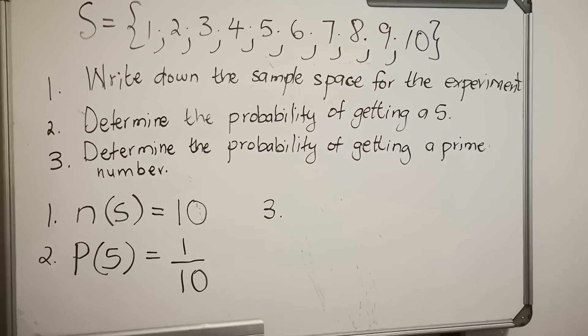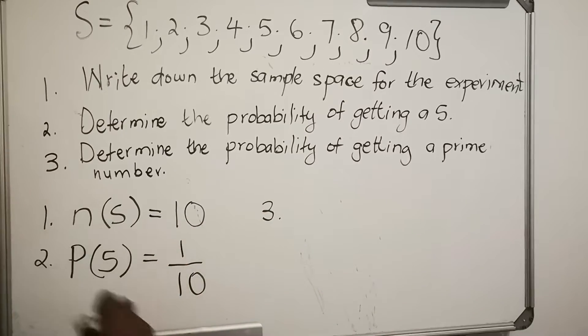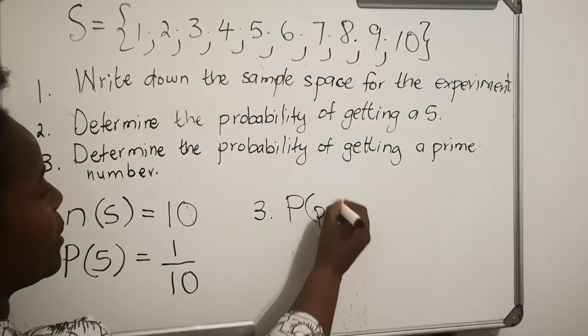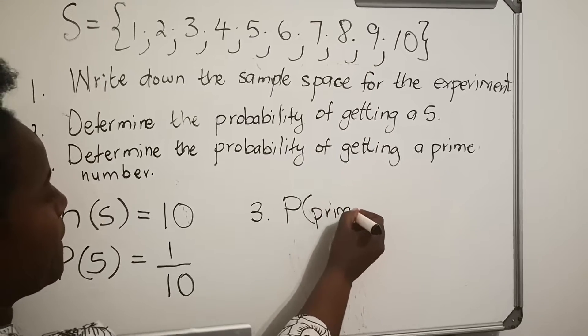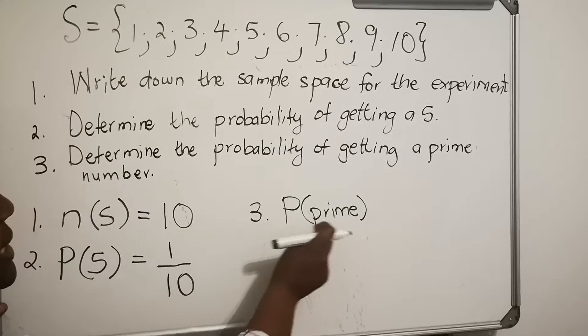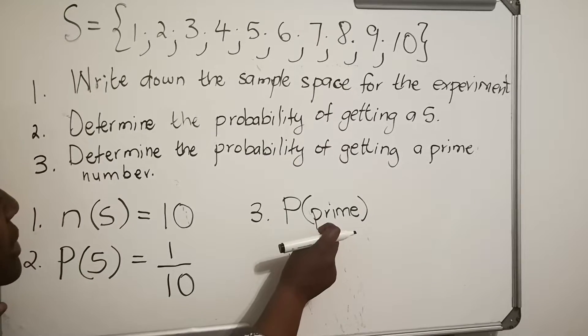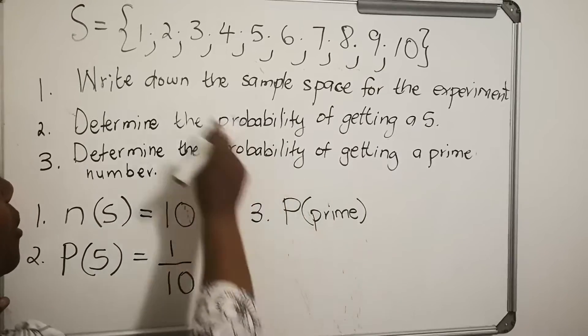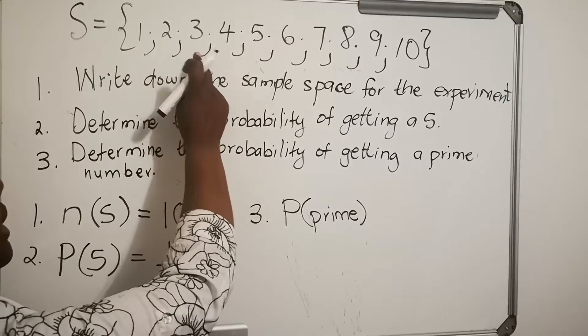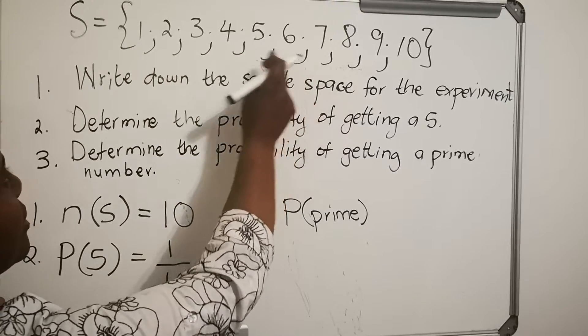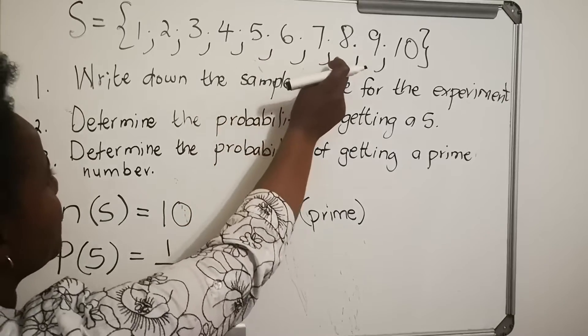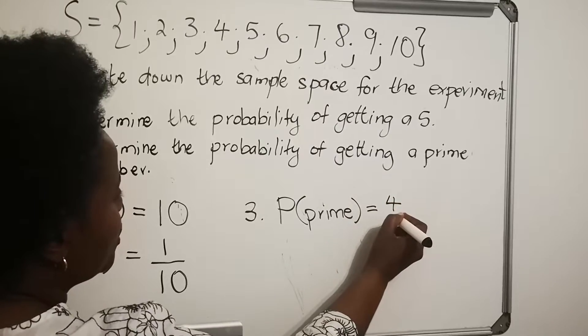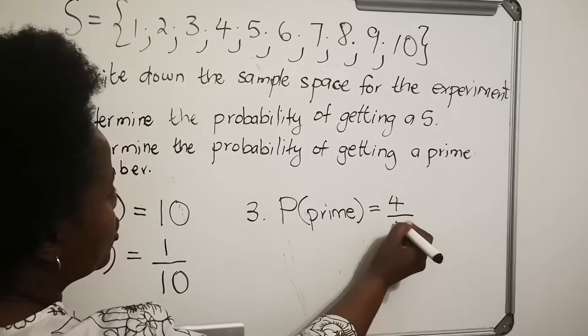Number 3 says determine the probability of getting a prime number. So you want to write probability. The P is for probability. Here you write the event that you want. Now you want to go to the sample space and count how many prime numbers you have. One is not a prime number, but two, three, five, and seven are. So they are 1, 2, 3, 4. We have four outcomes that we want over the total outcome of 10.